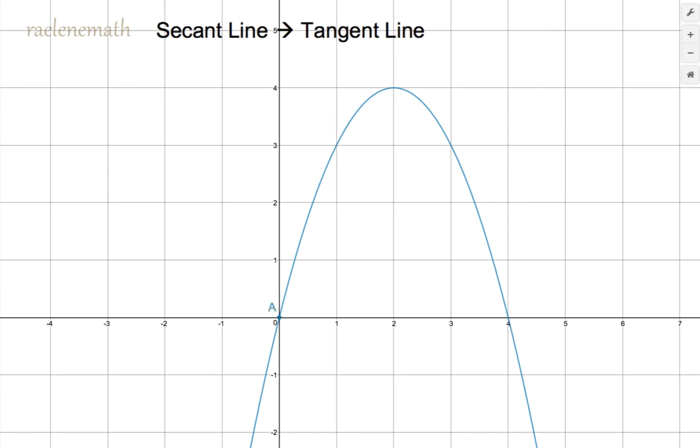So what we're going to do is have a tangent line in red to that curve and we want to build that tangent line out of a secant line. A secant line is a line that passes through two points.